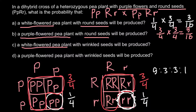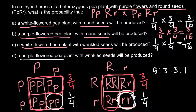Question C: a white-flowered pea plant with wrinkled seeds. White-flowered probability is one-quarter and wrinkled seeds probability is also one-quarter. Multiply: one-quarter times one-quarter equals one-sixteenth. Question D: a purple-flowered pea plant with wrinkled seeds. Purple flower probability is three-quarters and wrinkled seeds probability is one-quarter. Three-quarters times one-quarter equals three-sixteenths.